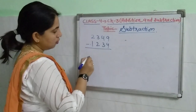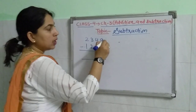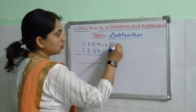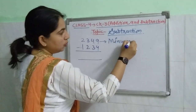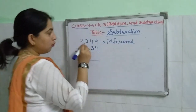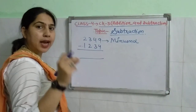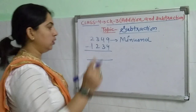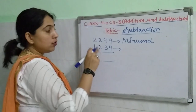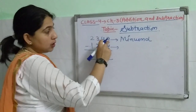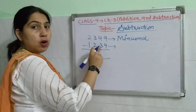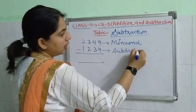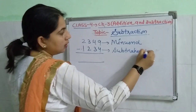So in subtraction, first of all I will tell you: the number from which we have to subtract any number is called the minuend. And the number which we have to subtract from this number is called the subtrahend.